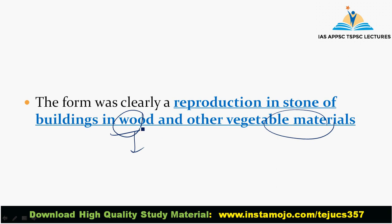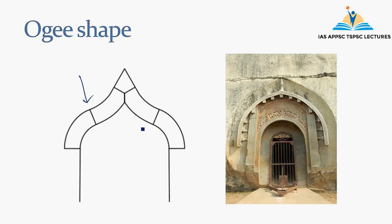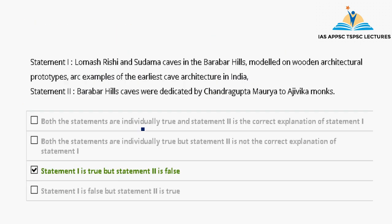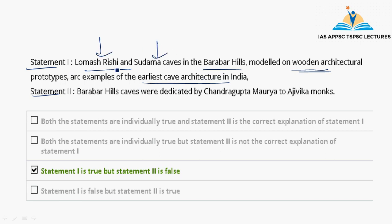This leads to a UPSC-style question with two statements. Statement 1: Lomasarishi and Sudama Caves in Barabar Hills are modelled on wooden architectural prototypes and are the earliest examples of rock-cut cave architecture in India. Statement 2: The Barabar Hills caves were dedicated by Chandragupta Maurya to the Ajivika monks.